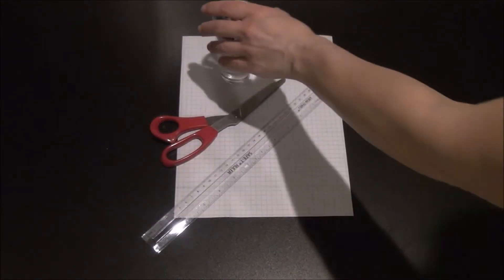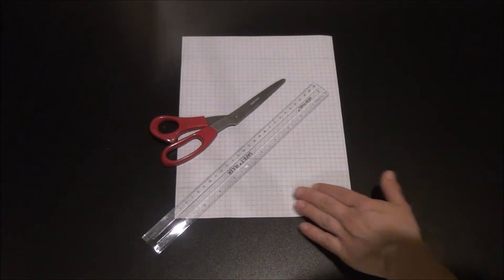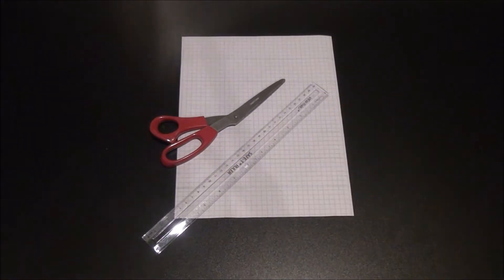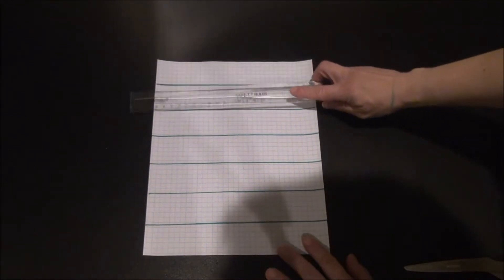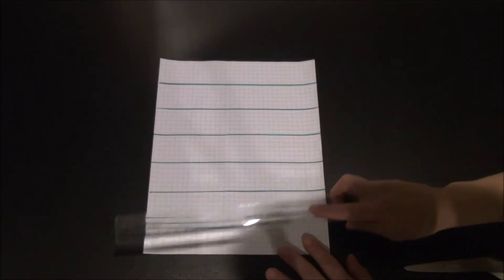For today's lesson, you will need paper, scissors, and a ruler. If you need to, press pause and get these materials now. Once you have your paper, you will need to draw seven parts so you can create some strips of paper. After you draw your parts, cut them into strips.